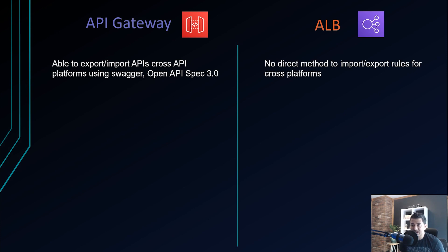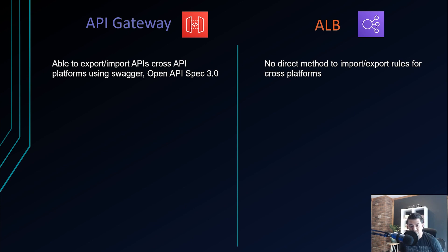API Gateway supports importing and exporting APIs across API platforms using Swagger or OpenAPI Spec 3. If you're running APIs on Apigee, Kong, MuleSoft, or another platform, you can export them as Swagger and import into API Gateway with very little infrastructure coding required. Similarly, you can export from API Gateway to avoid vendor lock-in. ALB has no direct method for importing or exporting rules.